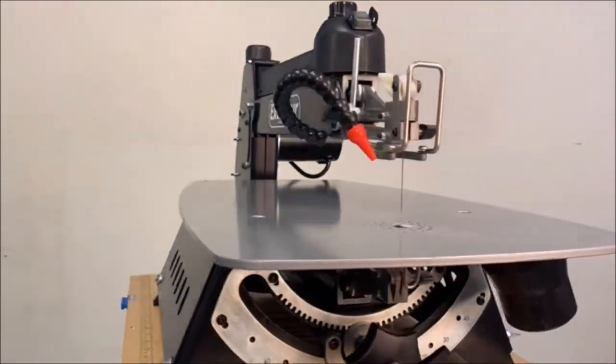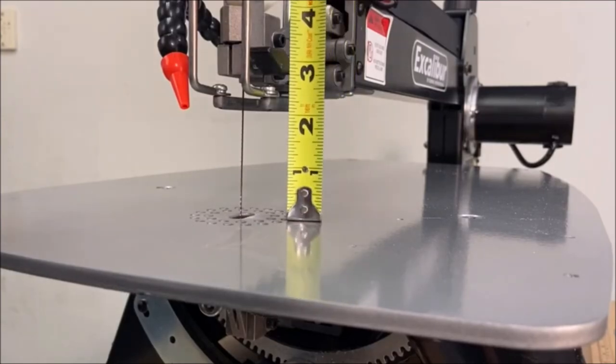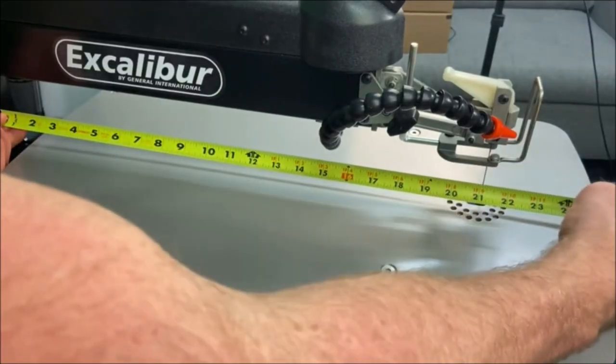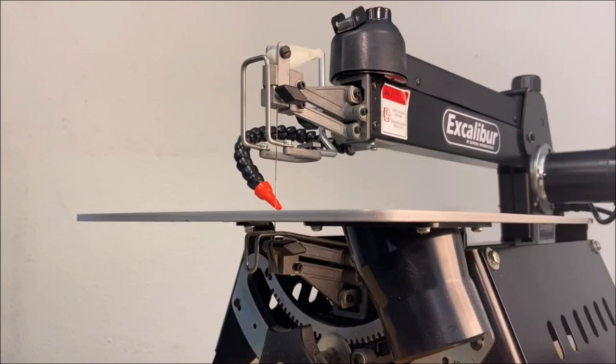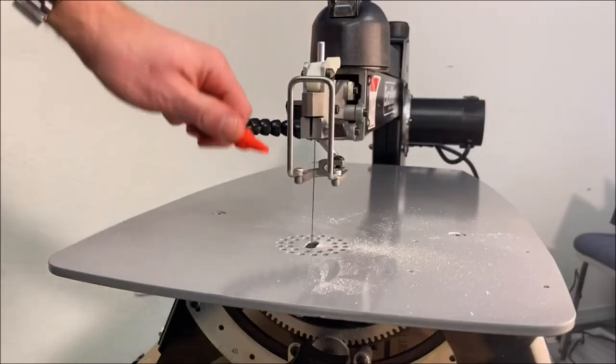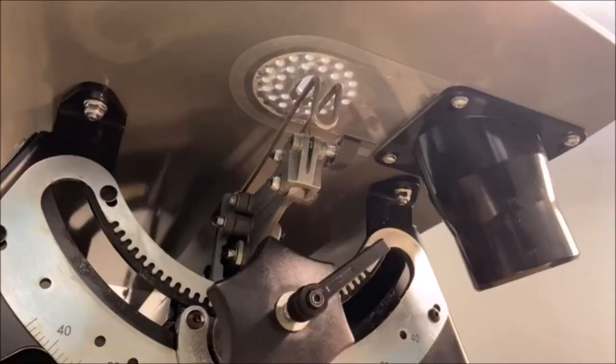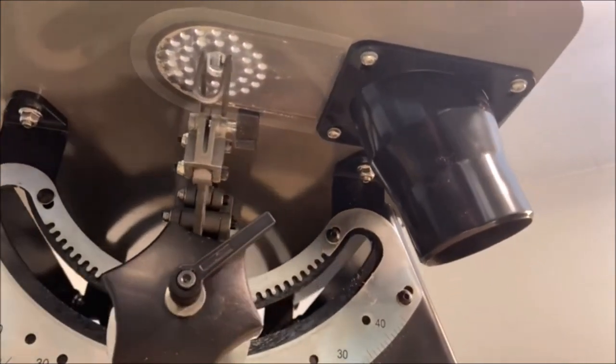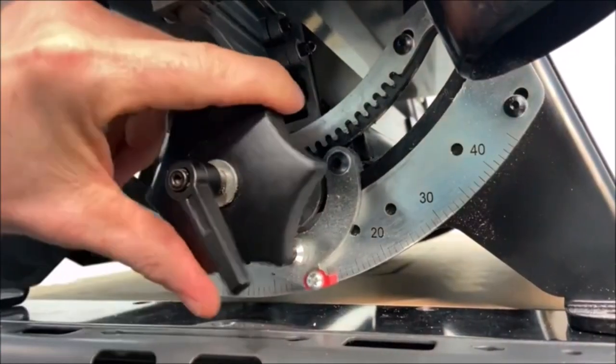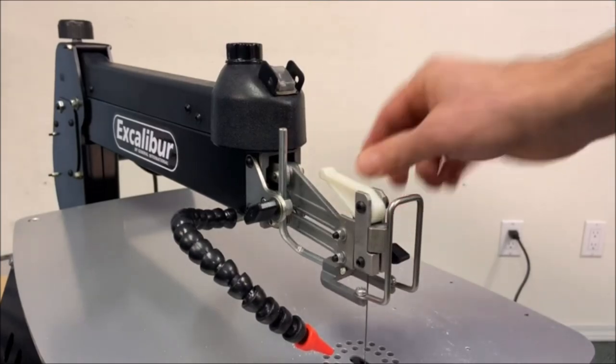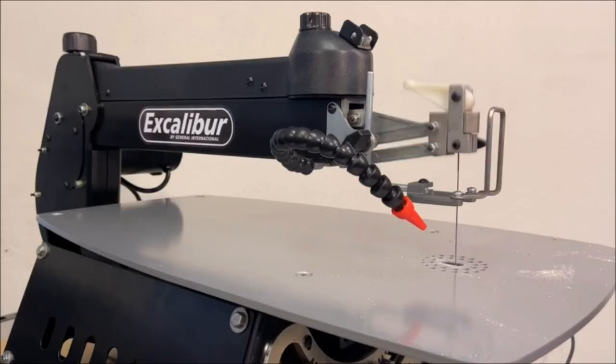The Excalibur 21-inch Scroll Saw is a versatile woodworking saw featuring a unique tilting head allowing tilt angles of 38 degrees left or 45 degrees right while keeping the workpiece level for precise cuts. Safety is prioritized with an on and off switch and integrated upper and lower blade guard assembly to prevent accidental hand contact with the active blade.